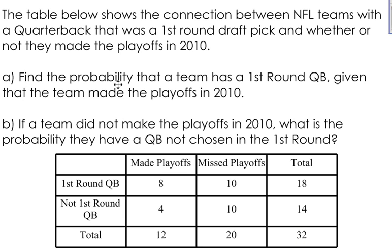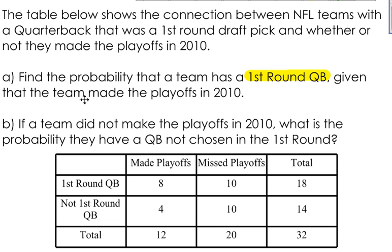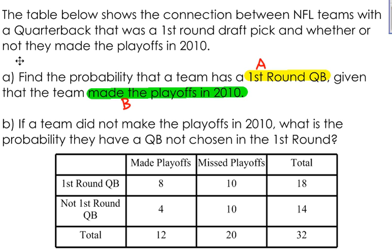Find the probability that a team has a first-round quarterback given that the team made the playoffs in 2010. Let's look at these two events. Having a first-round quarterback is event A, and making the playoffs is event B. The formula for conditional probability gives us the probability of A given that B has already occurred. When it's in a table like this, it makes it very easy to find.